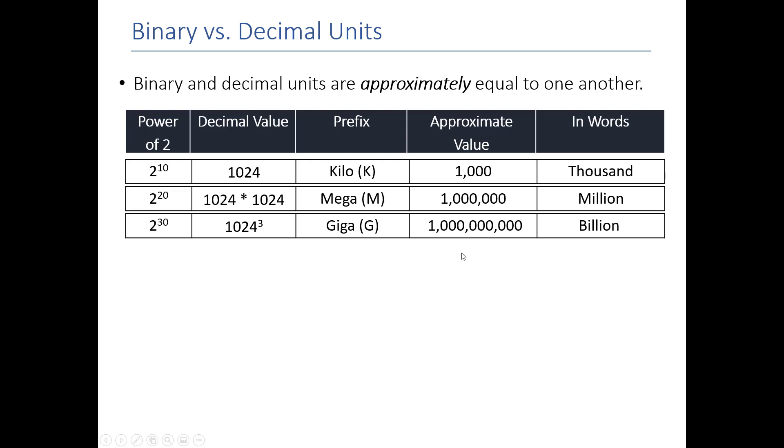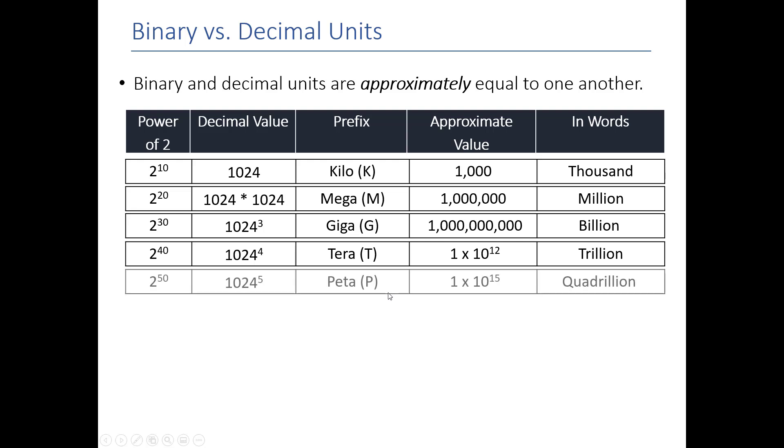After mega is giga. Giga is normally a billion, but we call it two to the 30. Terra is a trillion. We call that two to the 40. And, right now, you've heard of terabytes. After terabytes, there would be like petabytes, exabytes, and so on and so forth.